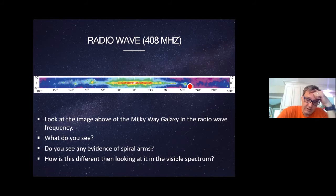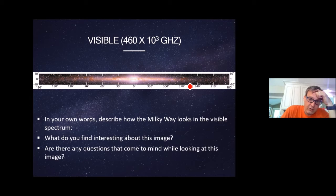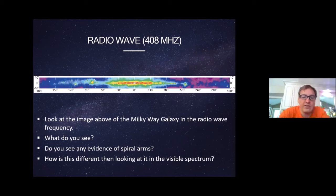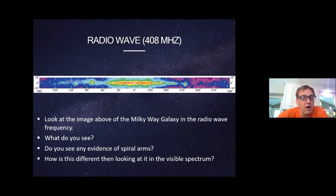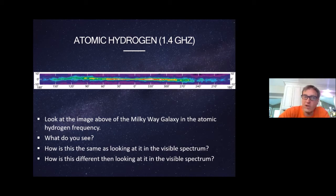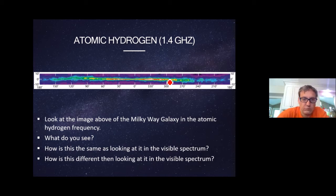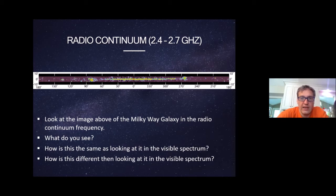Looking at the visible, you can't see spiral arms really well, but when you look at other wavelengths you can start to see evidence of them. Because astronomers have seen other galaxies, they knew spiral arms existed, and that helps determine that we live in a spiral galaxy. Here's atomic hydrogen at a different wavelength — you'd compare what this looks like to the visible. The radio continuum also shows a little globule on each side indicating a spiral arm and a very flat disk in the middle.